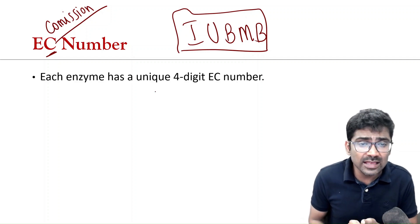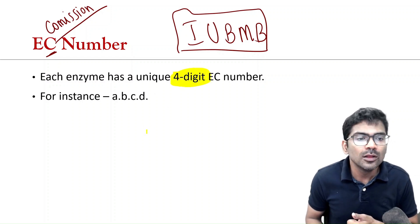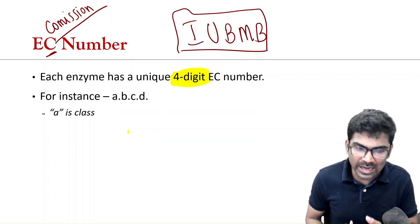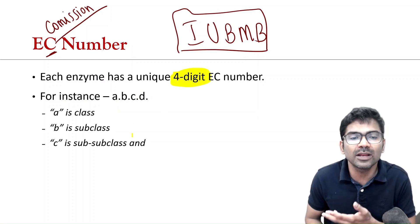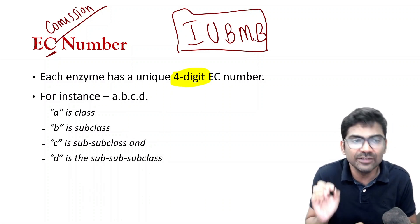Each enzyme has a four-digit EC number. For instance, A.B.C.D. So, A is class, B is subclass, C is sub-subclass and D is the unique number for the individual enzyme.